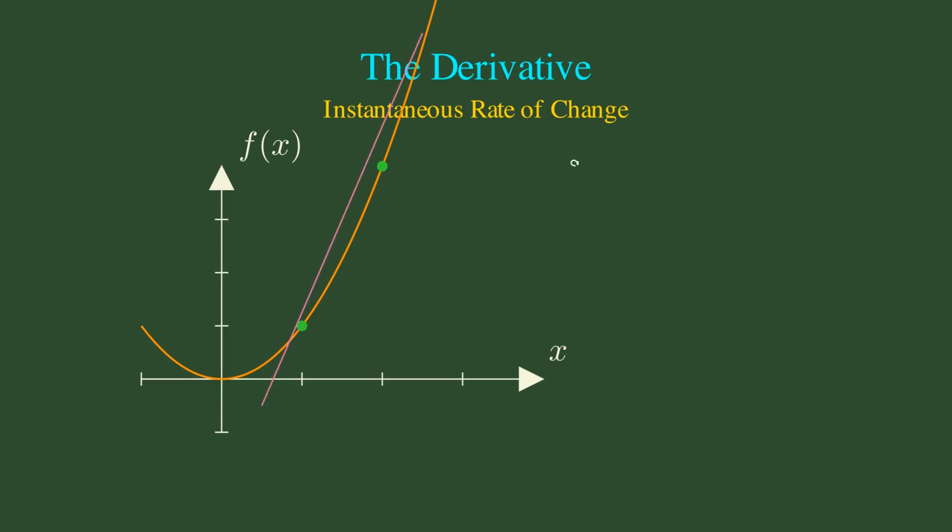Watch what happens as we bring point B closer and closer to point A. The secant line transforms into a tangent line, and we capture the instantaneous rate of change at that exact point.